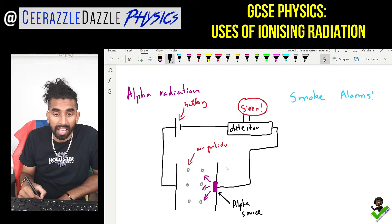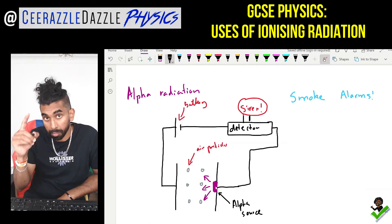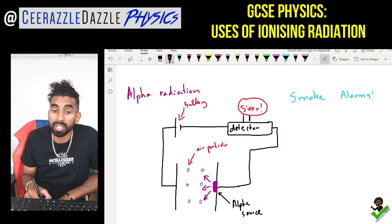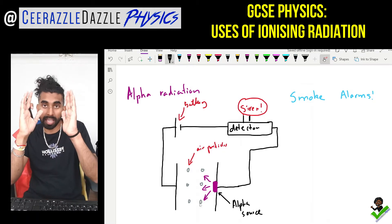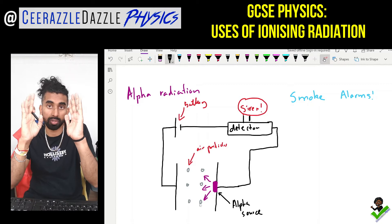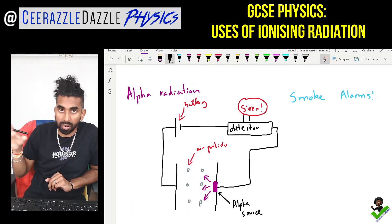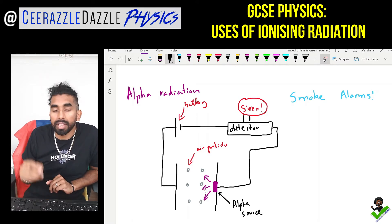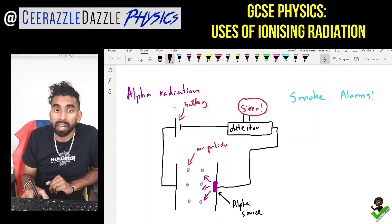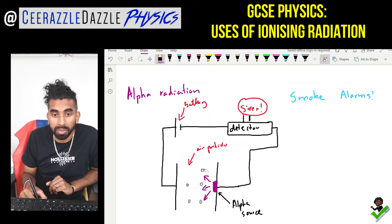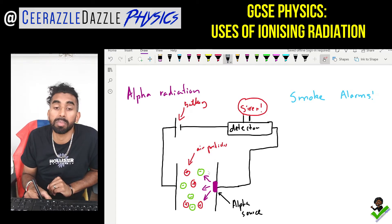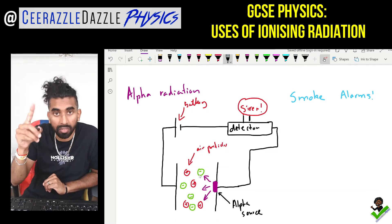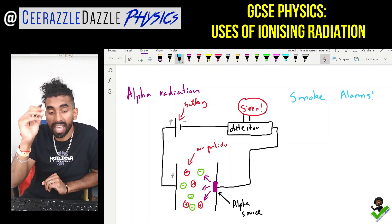In terms of physics, we have an alpha source — that little purple chunk — which emits alpha radiation. Those arrows show alpha radiation being emitted across the gap. In between the gap there are air particles. The alpha radiation travels outwards and ionizes those air particles, meaning they change their charge — some become positive and some become negative.